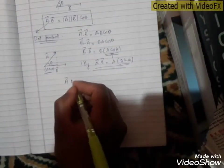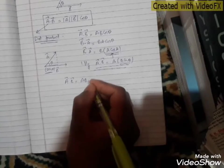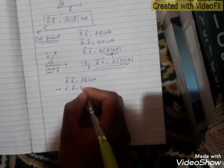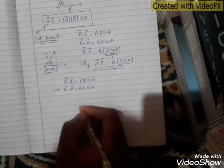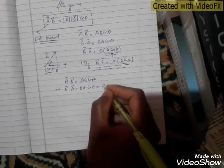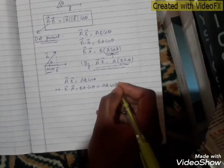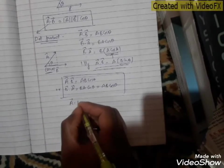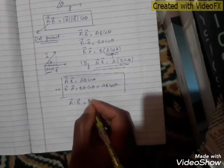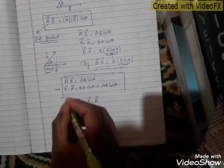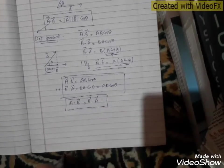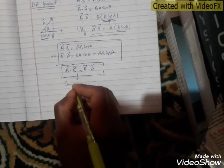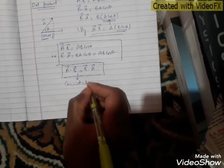So A dot B is equal to AB cos theta, and B dot A is equal to BA cos theta. This means A dot B is always equal to B dot A. This is the basic property of scalar product — scalar product is commutative, meaning it obeys the commutative law.